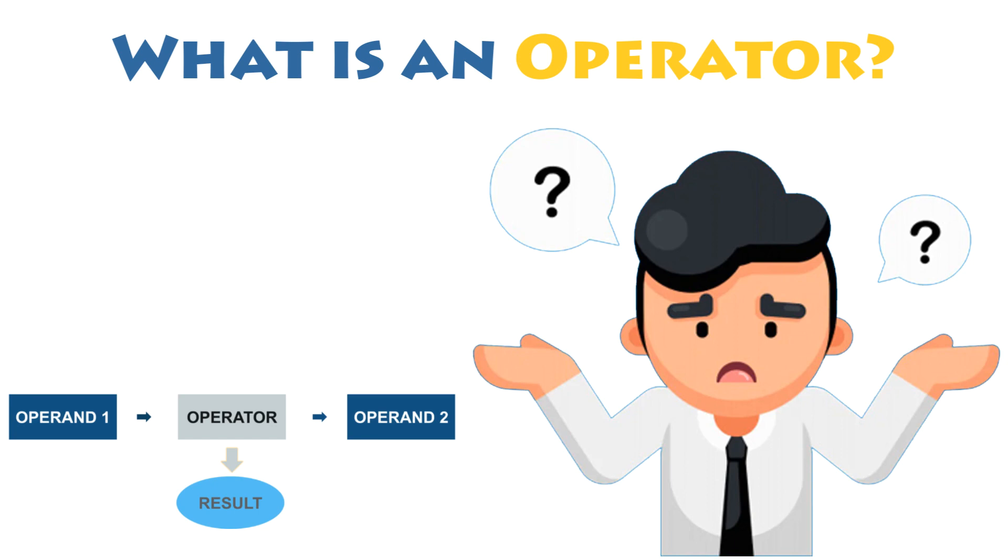What is an operator? Operators in Python are special symbols you will use for operations between two values or variables. The values that an operator acts on are called operands. And the output varies according to the type of operator you have used in the operation.